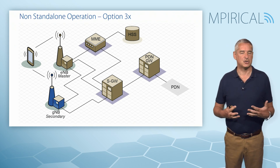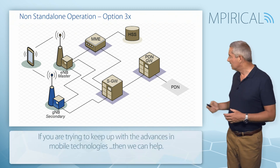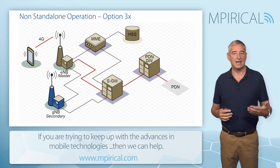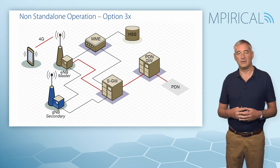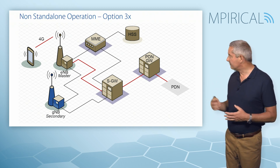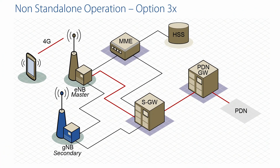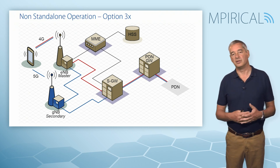Let's take a moment to see how traffic flows across this 5G non-standalone operation mode. On the red line, we're indicating how data will flow — from the packet data network arriving into our cellular network at the PDN gateway, tunneled down to the serving gateway. Following traditional 4G connectivity on the red line, data flows from the serving gateway to the eNodeB, and then across the 4G radio air interface down to our device.